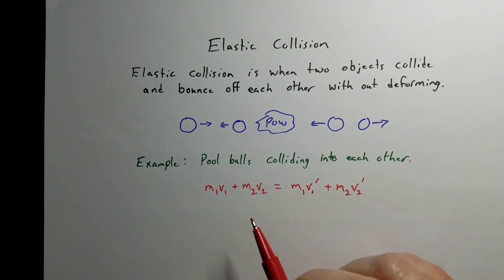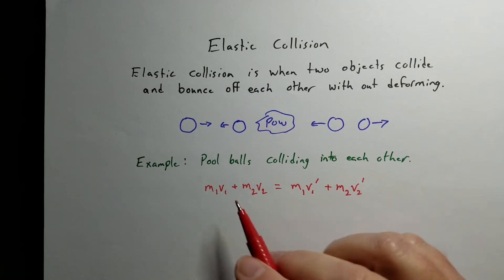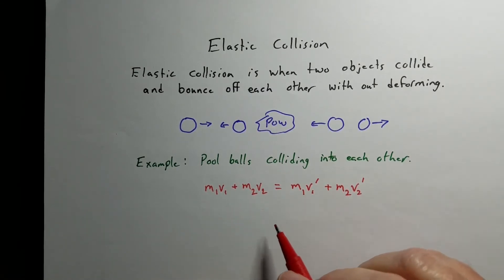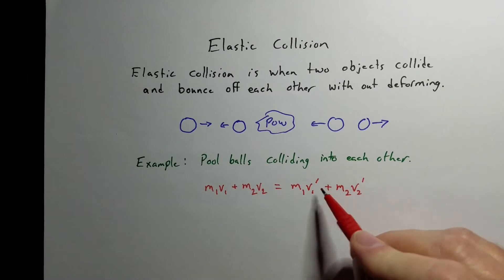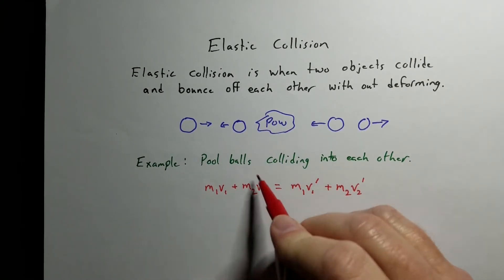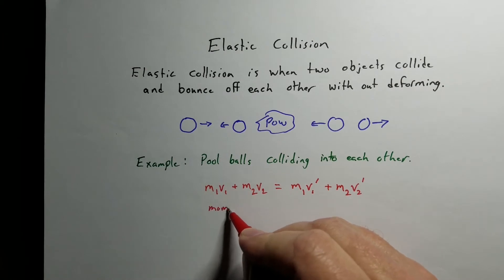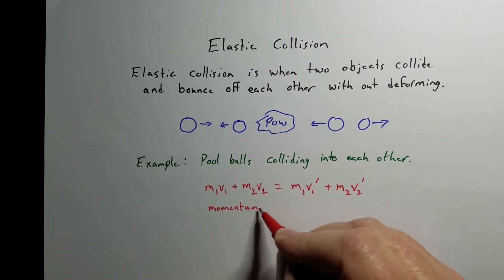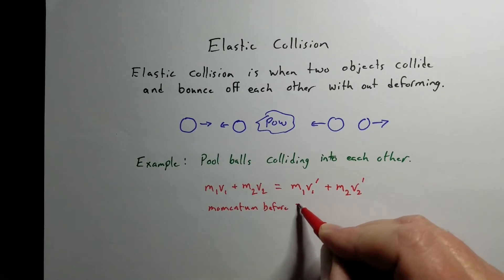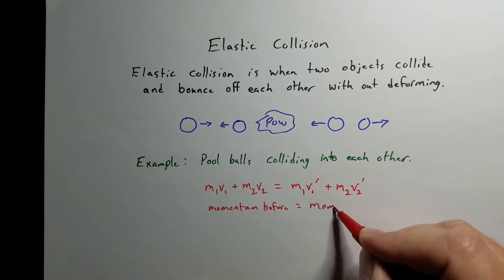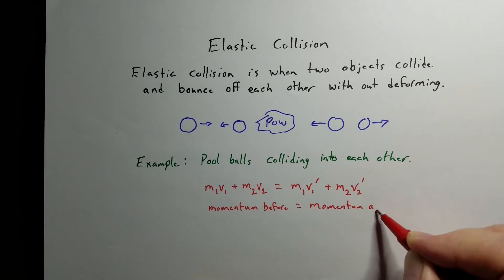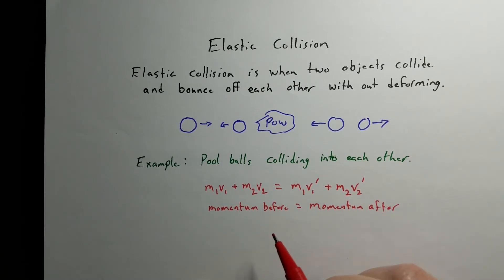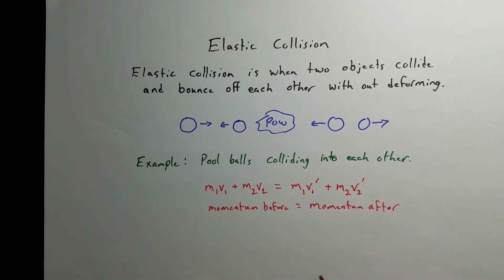In this equation we're assuming that the mass of each object stays the same; the only thing that changes is the velocity. The primes indicate the after side, so this is momentum before equals momentum after. We're talking about the instant before the collision and the instant after — not several seconds after, but just a moment right before and right after the collision is done.